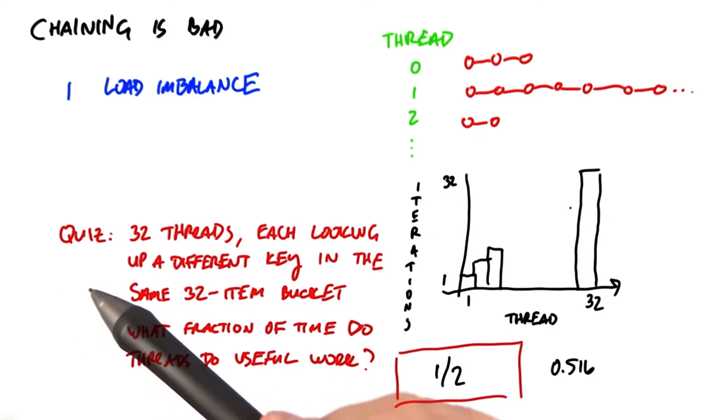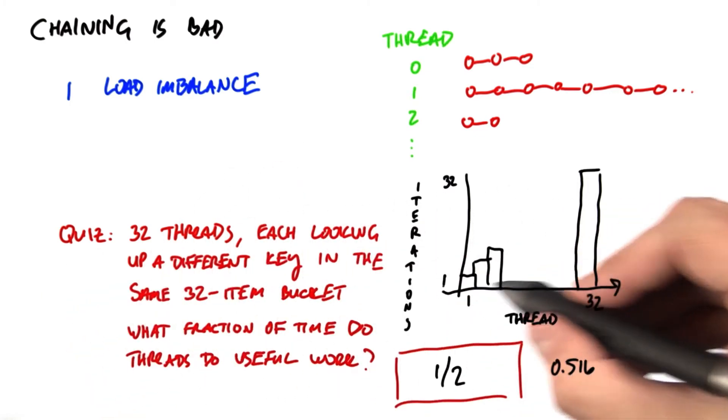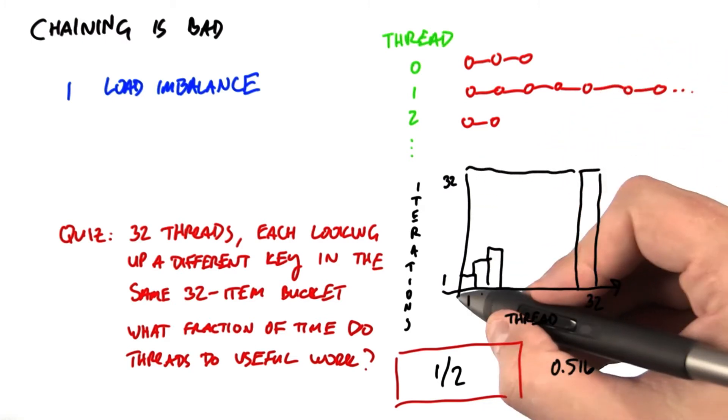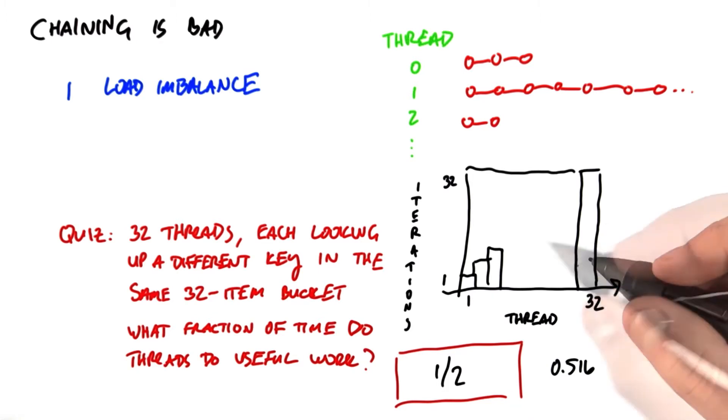And what that means is that it has spent 32 iterations walking through this linked list. We have 32 threads times 32 iterations, so the amount of work we could have that's useful is the product of the number of threads and the number of iterations.